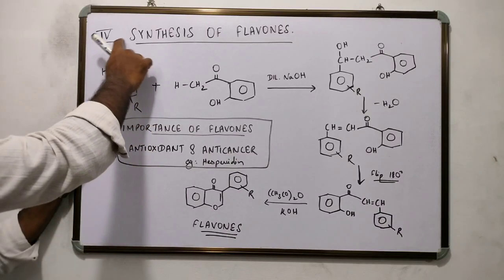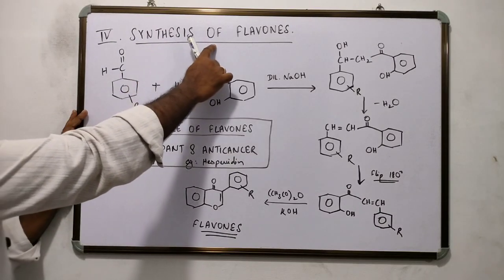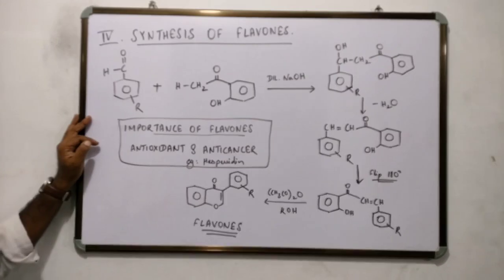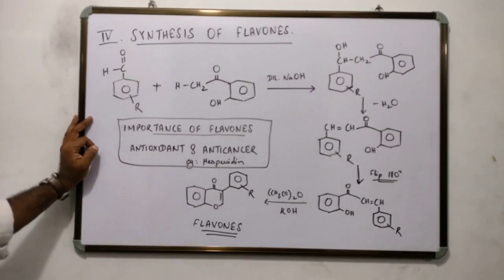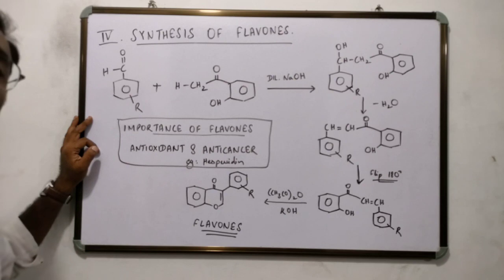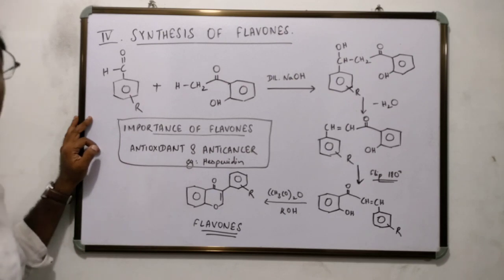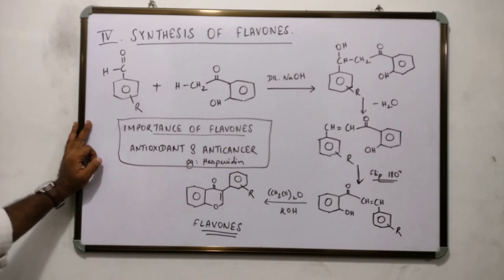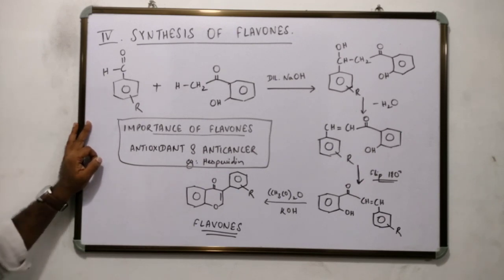Today we will discuss the synthetic importance for synthesis of flavones. Flavones are a subclass of flavonoids. They are found in plants and they are powerful free radical scavengers, which means they have antioxidant properties. This helps the plant in coping with biotic and abiotic stress.